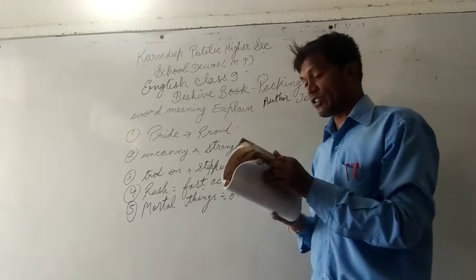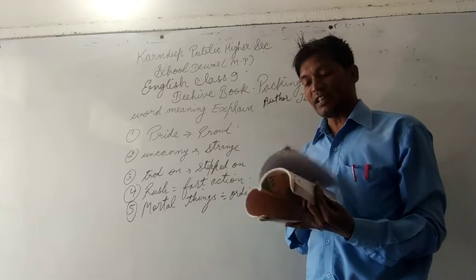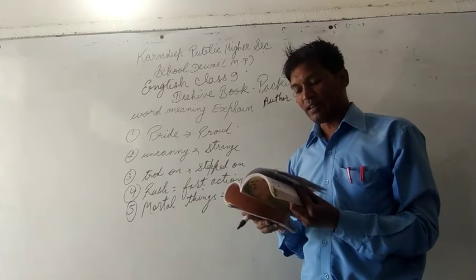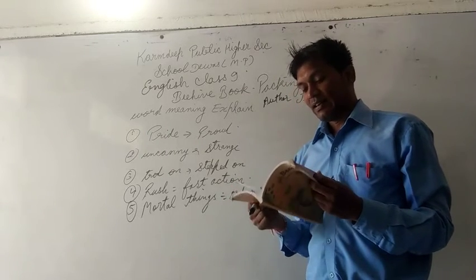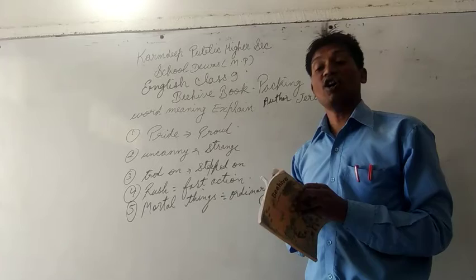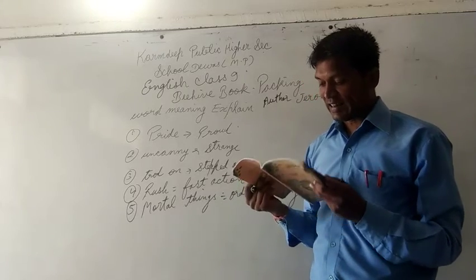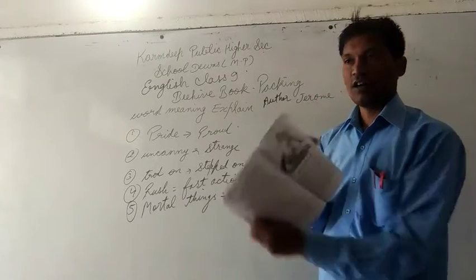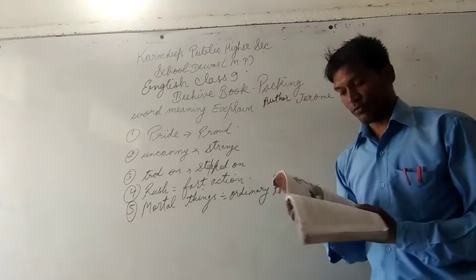This is the story in which he has described about three characters. One is George, second is Harris, and the third is the dog. See the dog.